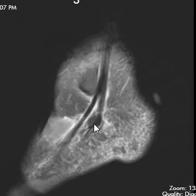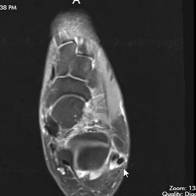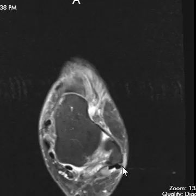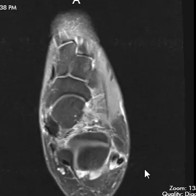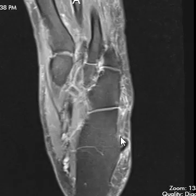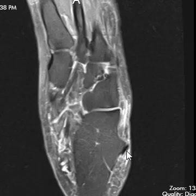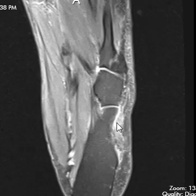Now we're going to look at axial images. This is with the toes up — the initial images. You see the peroneus longus and peroneus brevis, and this is the lateral malleolus. As we go inframalleolar, the peroneus brevis tendon pretty much disappears because of the magic angle phenomenon. The peroneus longus tendon is visible until the peroneal tubercle, and then below that it also disappears.